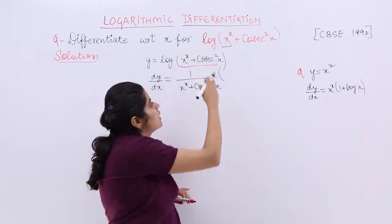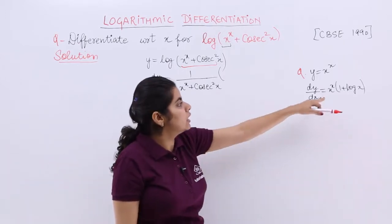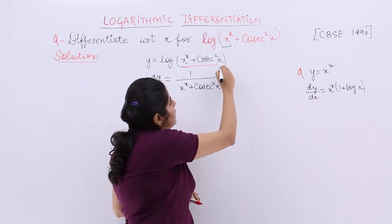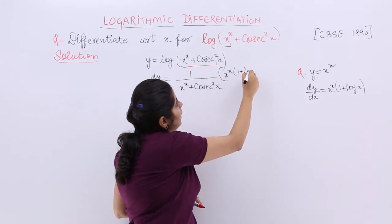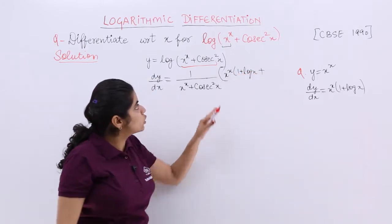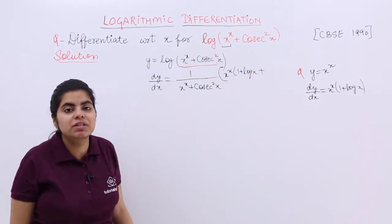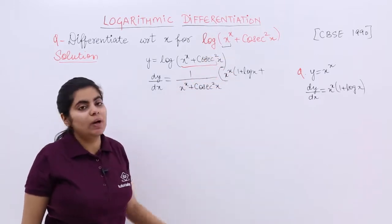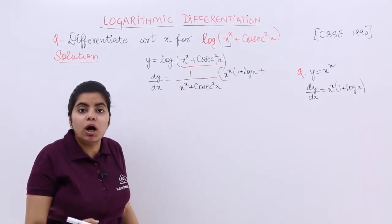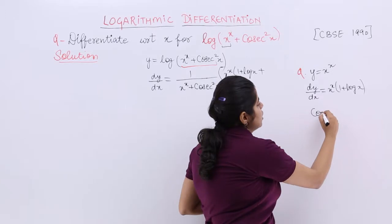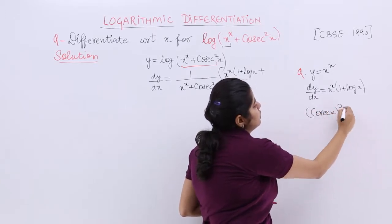So what is x^x differentiation? Directly write the answer. It is x^x(1 + log x). What is cosec²x's differentiation? Cosec²x means (cosec x)².